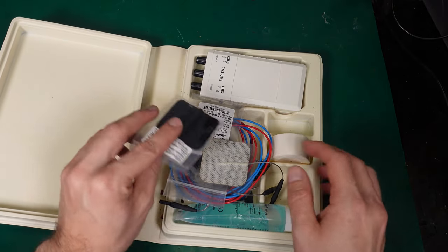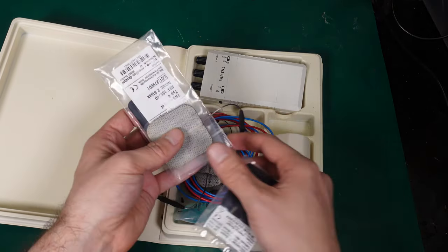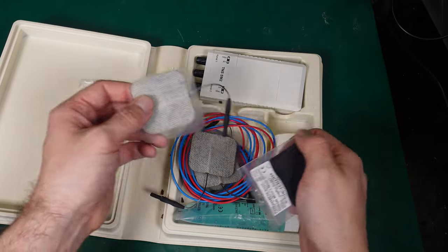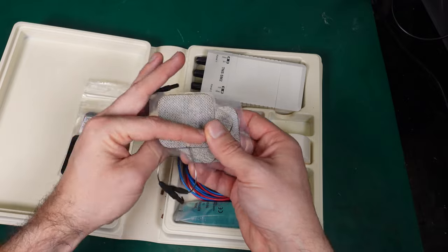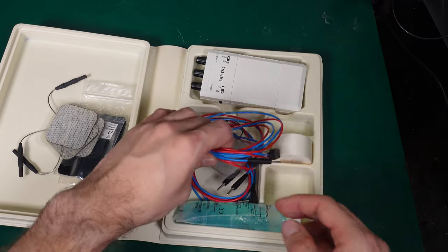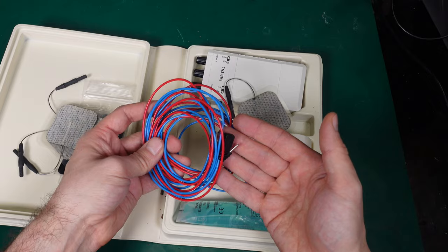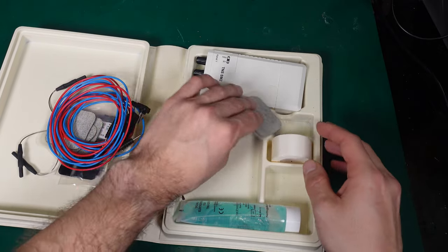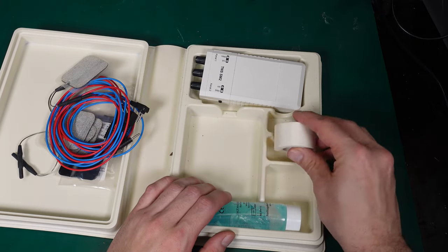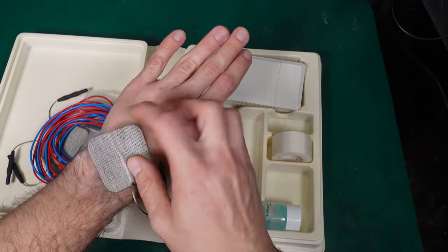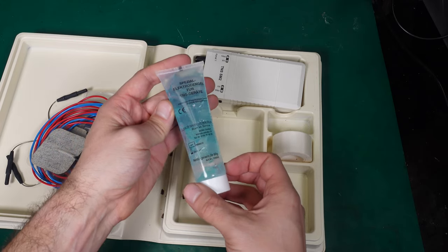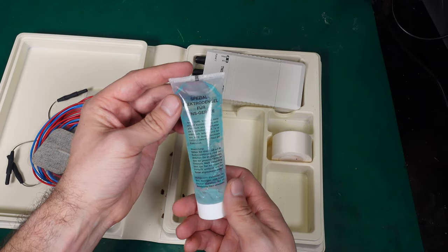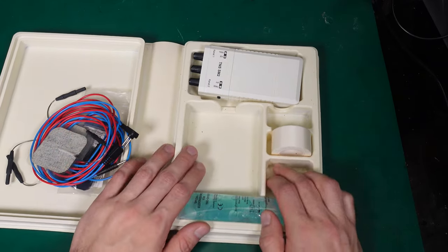This is how the device looks like. So we've got a bunch of electrodes that you are going to attach to your body, you've got wires to connect them together, we've got tape to put the electrodes in place and prevent them from moving, and we also got some sort of gel.